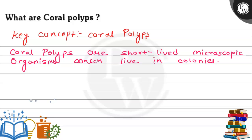Let's understand this question: what are coral polyps? The key concept here is coral polyps — hum unhe short-lived microscopic organisms bolte hain, microscopic matlab jo sirf microscope ki madad se dikhen, naked eye se na dikh paen, aur jo colonies mein rahte hain. So these are what we call coral polyps.